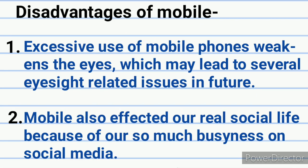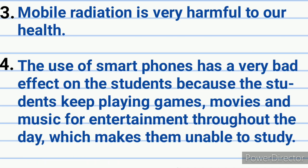Disadvantages of Mobile. First, excessive use of mobile phones weakens the eyes, which may lead to several eyesight related issues in future. Second, mobile has also affected our real social life because of our so much busyness on social media. Third, mobile radiation is very harmful to our health. Fourth, the use of smartphones has a very bad effect on students because they keep playing games, watching movies and listening to music for entertainment throughout the day, which makes them unable to study.